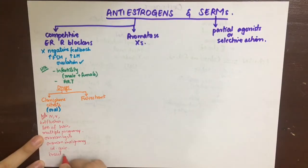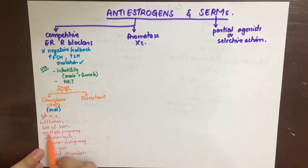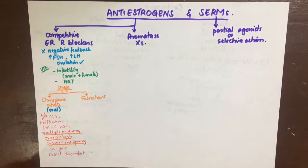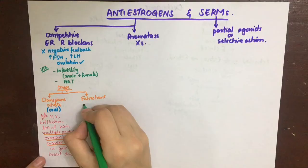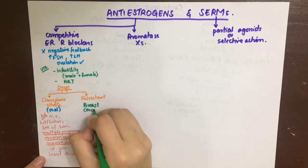The next drug is fulvestrant, and its main use is in breast carcinoma, where it inhibits the estrogen receptors that cause breast tissue proliferation.